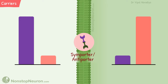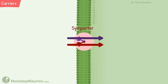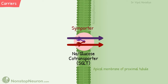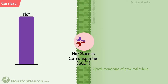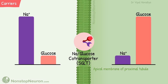Symporters and antiporters move one type of molecule downhill and utilize the energy from that movement to move another type of molecule uphill. In symporters, both substances move in the same direction. For example, the sodium-glucose co-transporter in the apical membrane of the proximal tubule. Here, sodium concentration is high in the lumen compared to inside the cell, and glucose concentration is higher inside compared to the lumen. This co-transporter couples the movement of glucose with the downhill movement of sodium, so glucose is moved uphill. This type of transport is called secondary active transport.